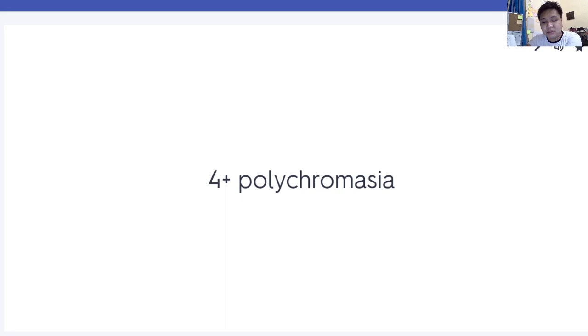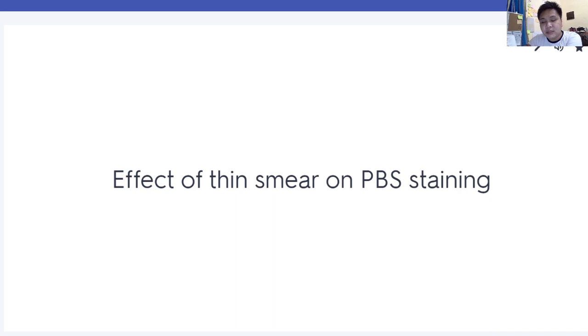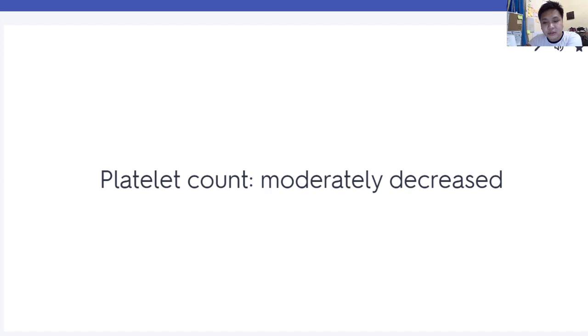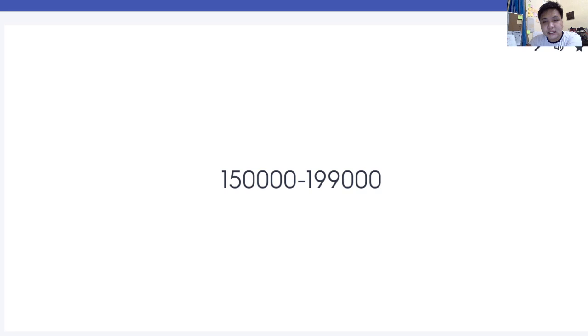Excessively red is the effect of a thin smear on peripheral blood smear staining. Platelet count ranges: 0 to 49,000 — markedly decreased; 50,000 to 99,000 — moderately decreased; 100,000 to 149,000 — slightly decreased.